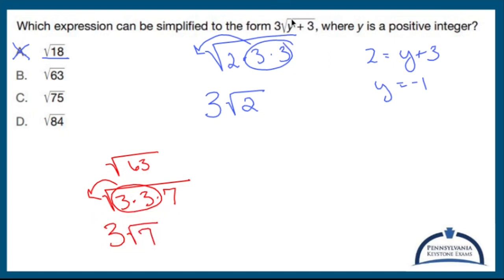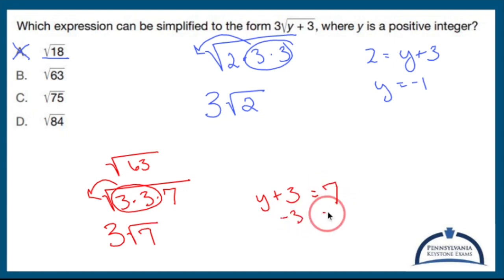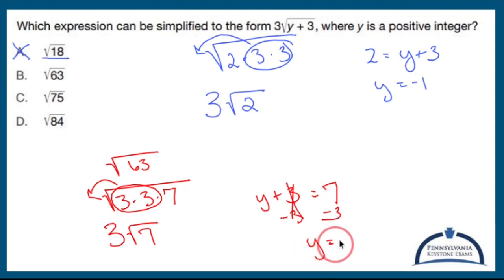So that looks promising. If I want y plus 3 to equal 7, I subtract 3 from both sides, and I get y equals 4, which happens to be a positive integer. So the answer has got to be B. Very bizarre problem, very weird, but that's how you do it.